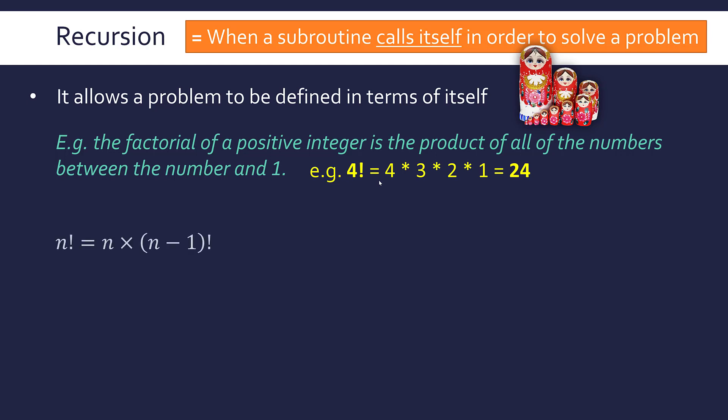The reason why we're not going to is because actually we can represent factorials in a very simple way mathematically. And in a way which really lends itself to recursion. So as a general rule, we can say n, as a number, factorial, is the same as n, the number itself, times n minus one factorial. So four factorial is the same as going four times three factorial. Three factorial is the same as going three times two factorial. And so on and so on.